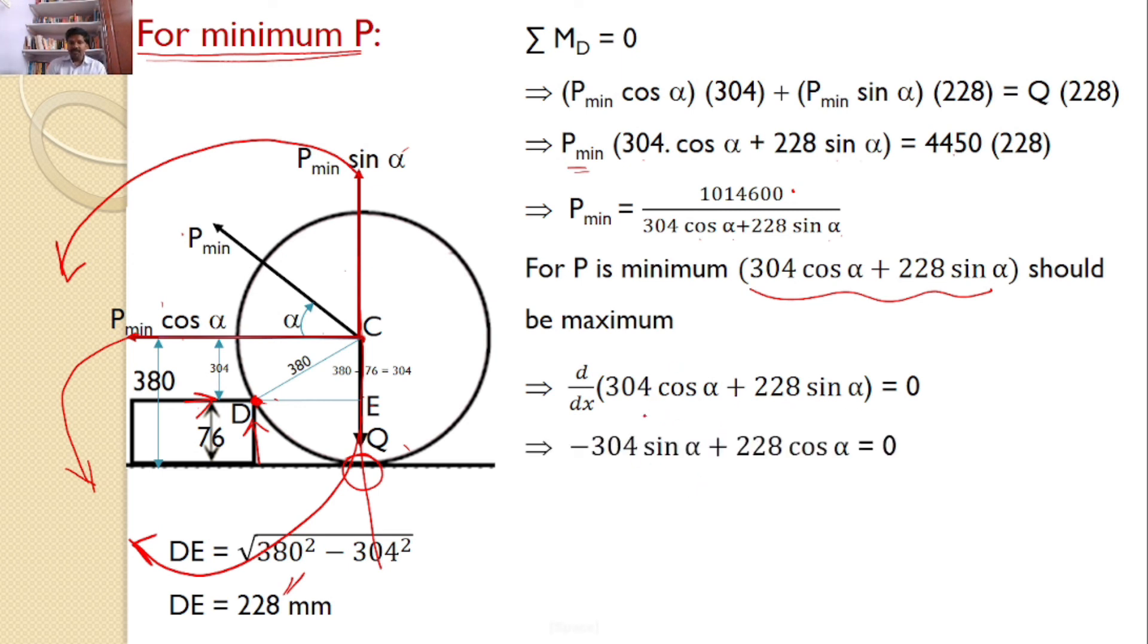After simplification, you will get differentiation minus 304 sin alpha plus 228 cos alpha is equal to 0. So upon simplification you will get tan alpha is equal to 0.75 or alpha is equal to 36.87 degrees.